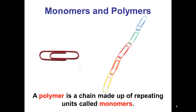Now all of these macromolecules are polymers. A polymer is a chain made up of repeating units that we call monomers. Here's an example you're probably familiar with — shown on the right is a paperclip chain. A paperclip chain is a chain of repeating units made up of paperclips. So in this case, the chain would be the polymer, and the repeating unit, or the monomer, would be the paperclip.